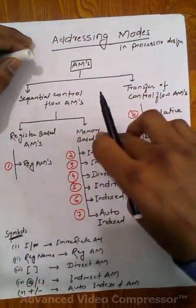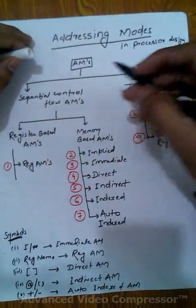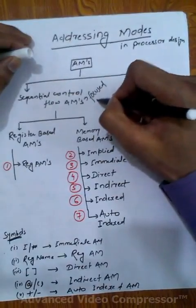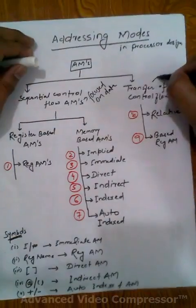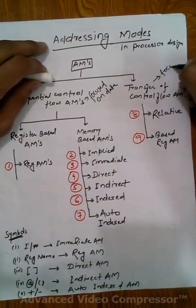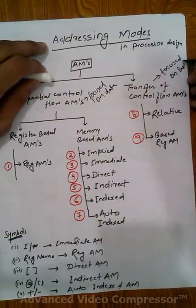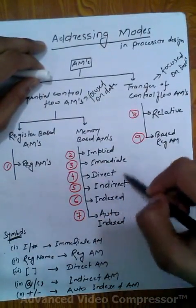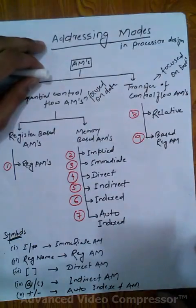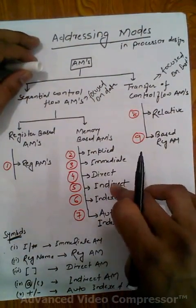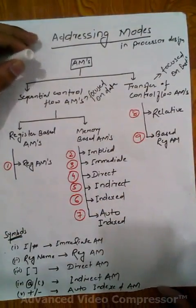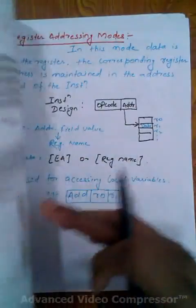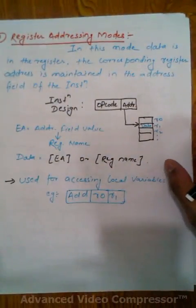Sequential control flow addressing mode is further divided into two parts: register-based addressing mode and memory-based addressing mode. The sequential control flow addressing mode is focused on data, while transfer of control flow is focused on instruction. In register-based addressing mode we have: register, implied, immediate, direct, indirect, and indexed addressing modes — total nine addressing modes. We will discuss up to indirect in this part, and the rest in the next part.